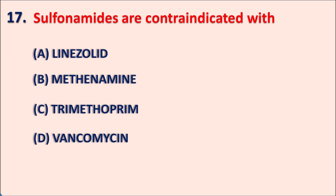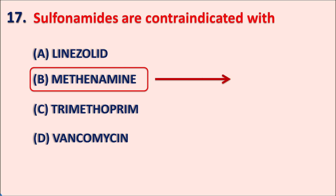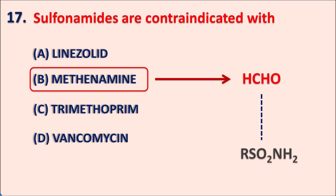Seventeenth one: with which drug are sulfonamides contraindicated? The right answer is methenamine. Methenamine, also called urotropin, is used to treat urinary tract infections. In the presence of acidic pH in urine, methenamine is converted into formaldehyde and ammonia, and this formaldehyde shows antibacterial activity. However, when methenamine is given along with sulfonamides, the sulfonamides react with the formaldehyde, condensing it and causing loss of activity — making methenamine ineffective.